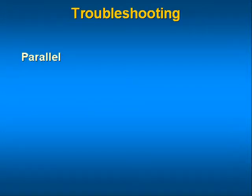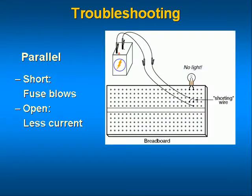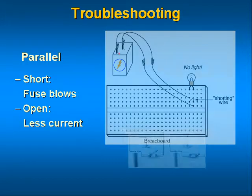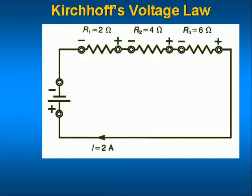Troubleshooting a parallel circuit: if there is no voltage across the parallel branches, check to see if the power supply is turned on, then check the fuse or circuit breaker. If the fuse is blown, there is probably a short in one of the branches. Check whether current is flowing from the power supply and whether it is the correct amount. If the current is lower than normal, a branch may be open. If the current is much higher than normal, there may be a short in one of the branches.